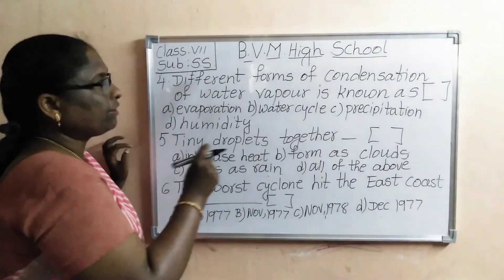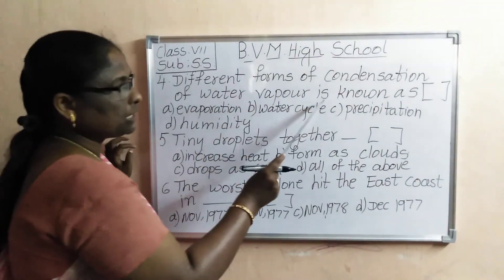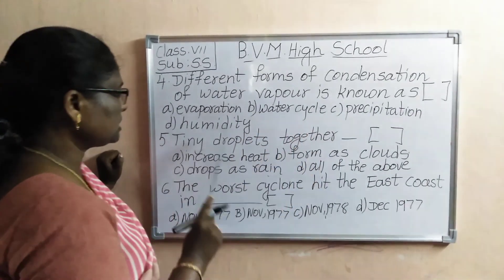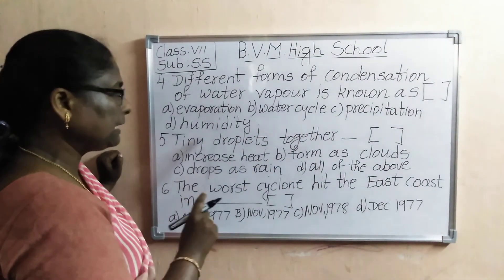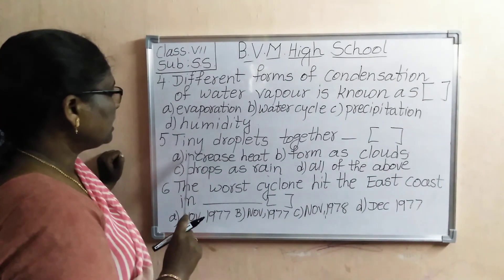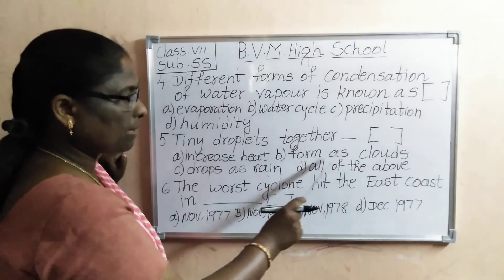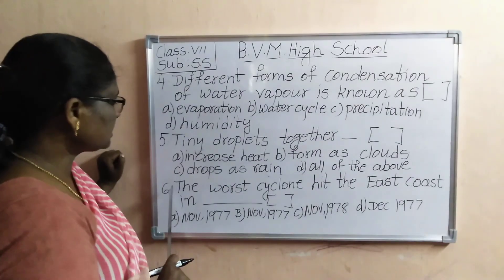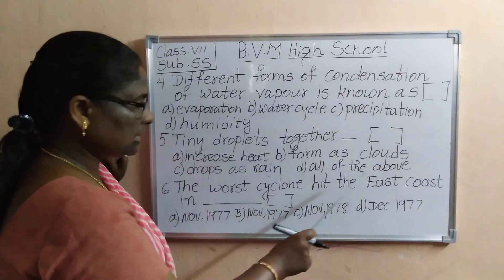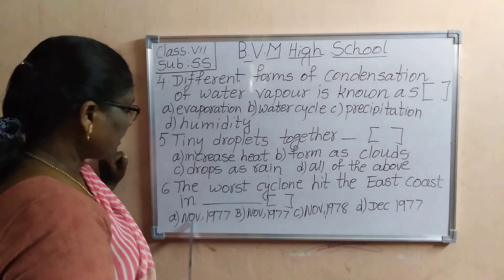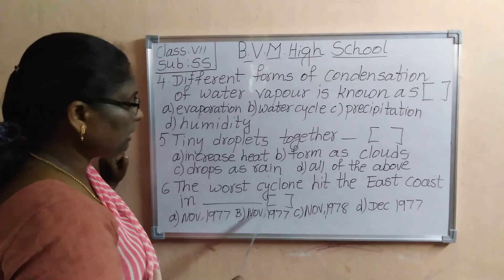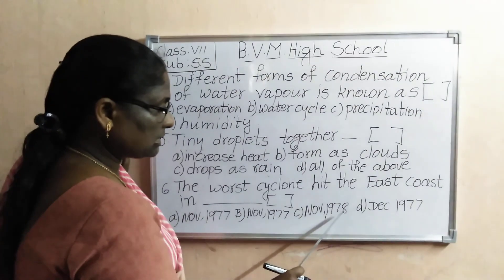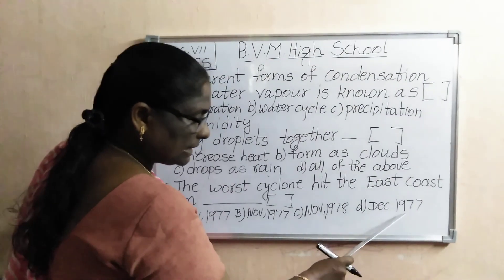Fourth one: different forms of condensation of water vapor is known as dash. Options: evaporation, water cycle, precipitation, humidity. Fifth one: tiny droplets together dash. Options: A. Increase heat, B. Form as a cloud, C. Drop as a rain, D. All the above. Sixth one: the worst cyclone hit the east coast in dash. Options: A. November 1977, B. November 1977, C. November 1978, D. December 1977.